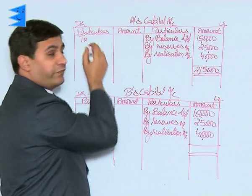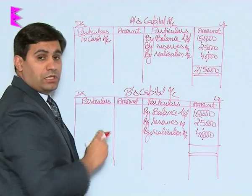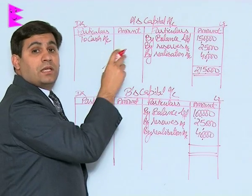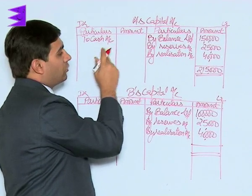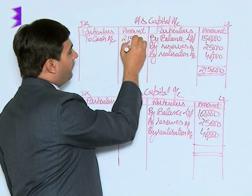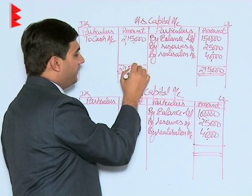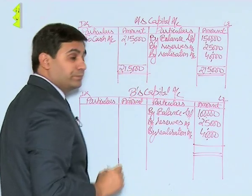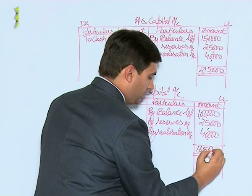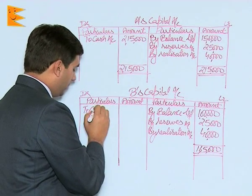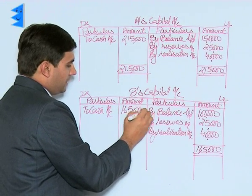Since this is dissolution, the amount of ₹2,15,000 is paid off to A through the cash account — because the balance sheet was showing a cash balance. This account now totals out with no balance remaining. Similarly, for B the total is ₹1,65,000 payable, paid off through 'to cash account ₹1,65,000.'